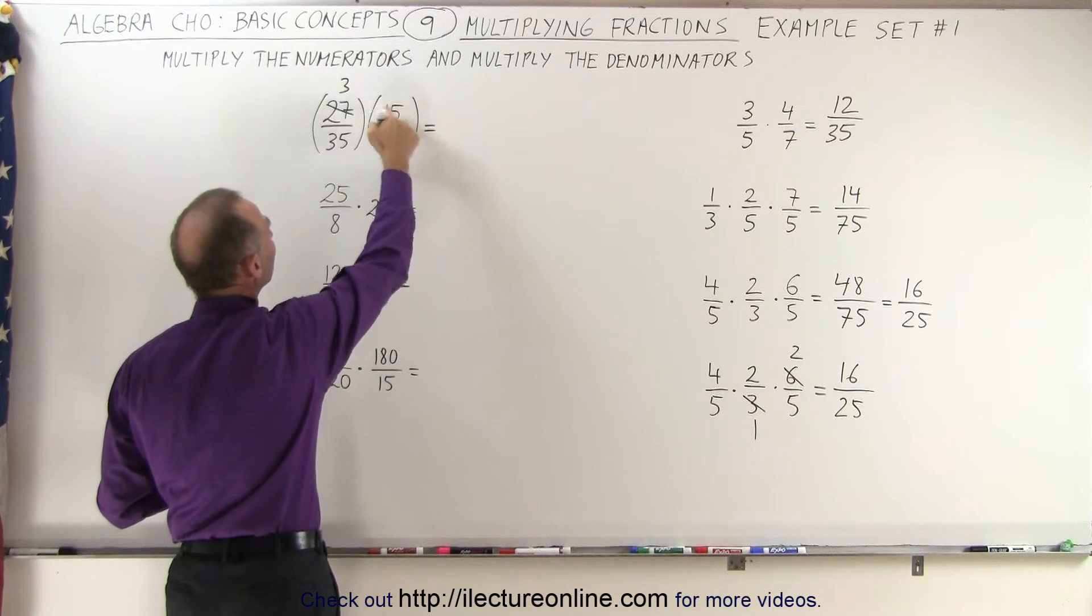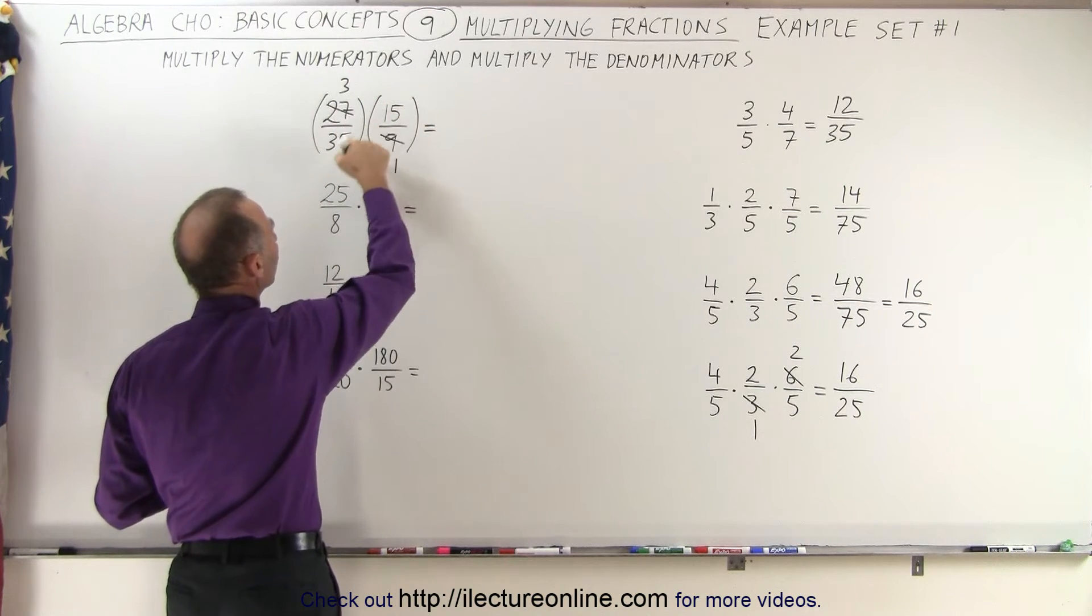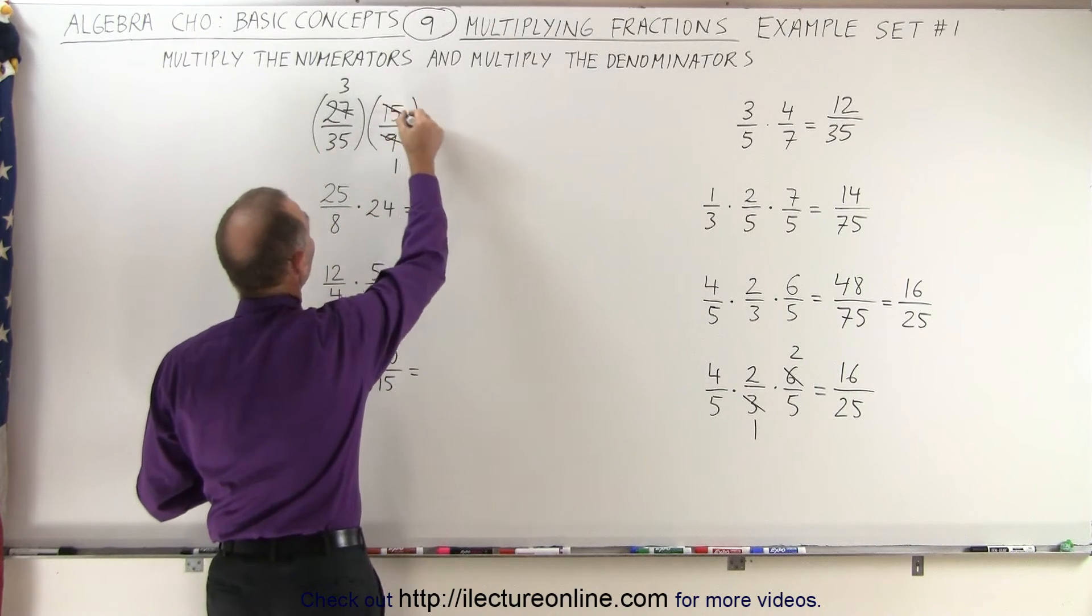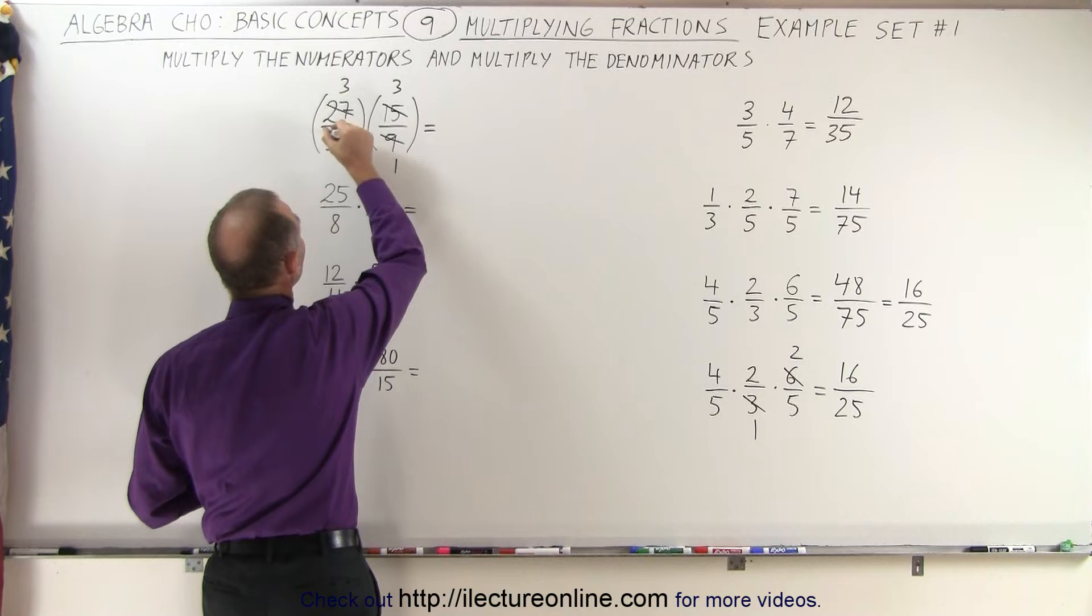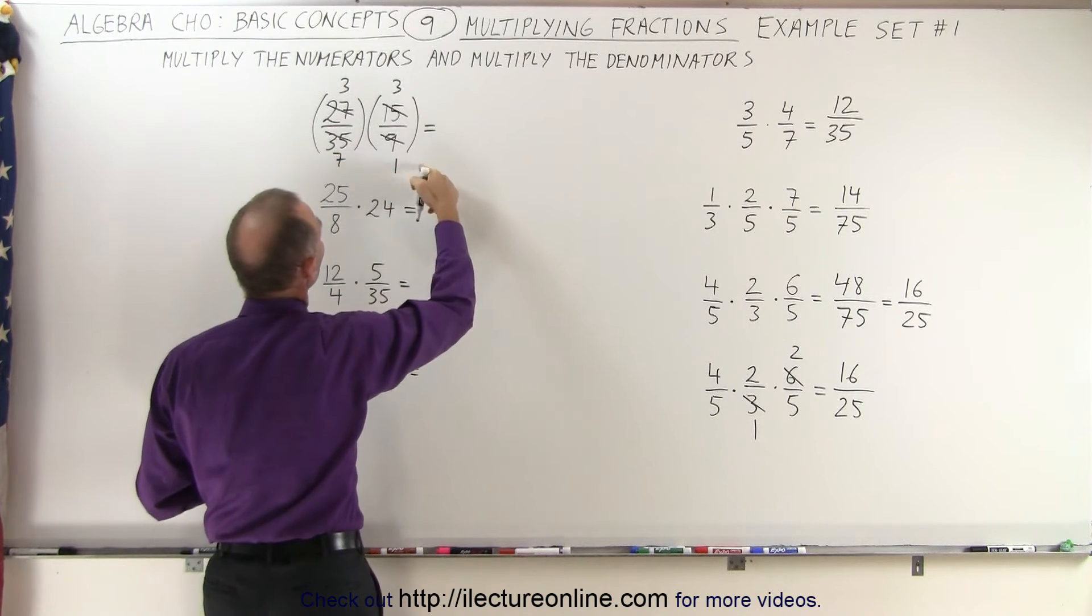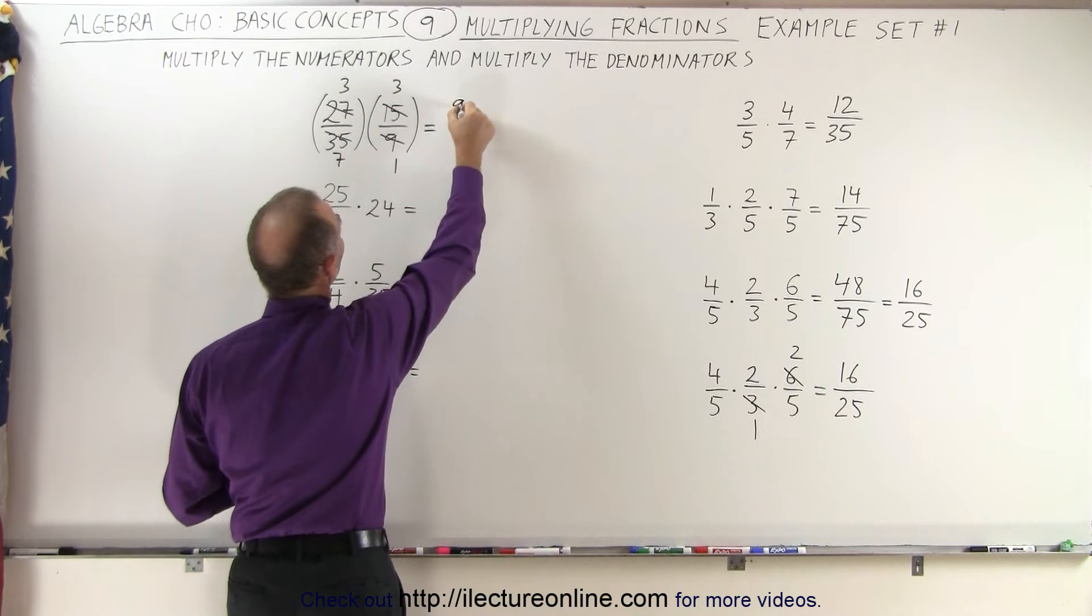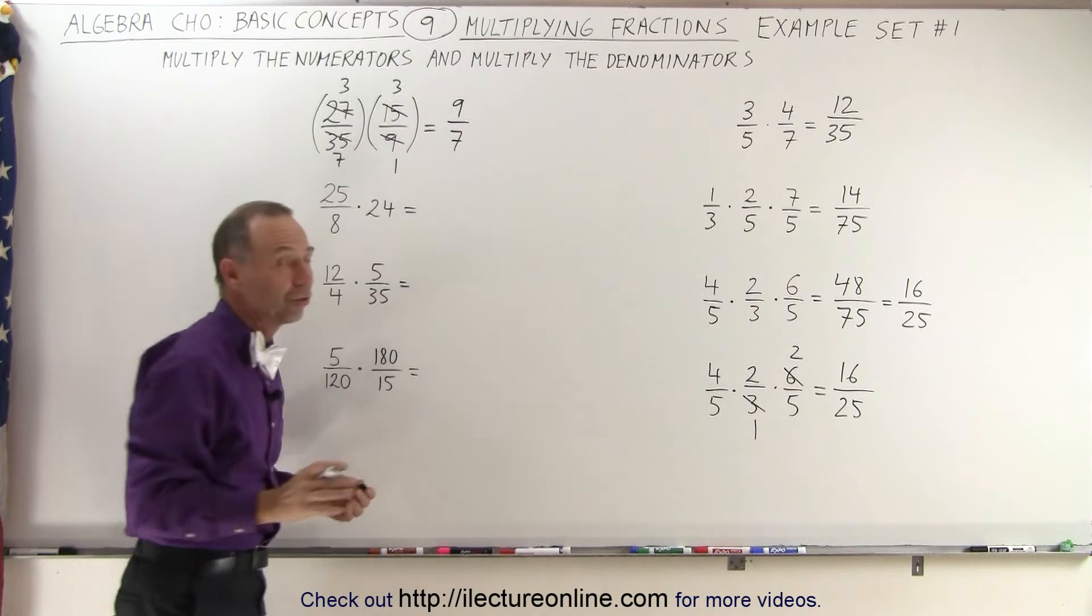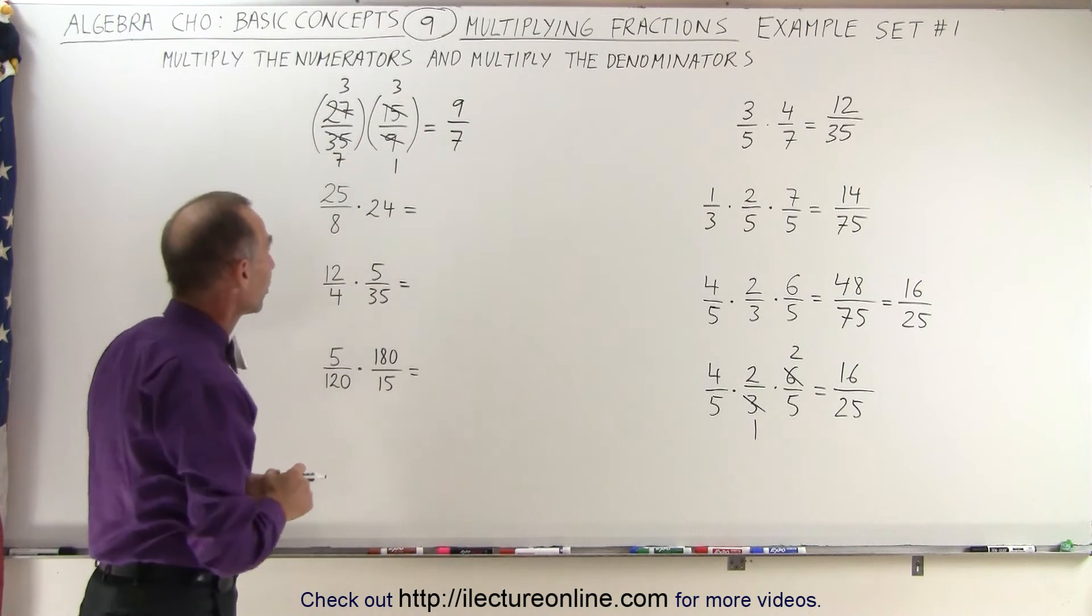Then we have 15 and 35. Both are divisible by 5 because they end in a 5. So 15 divided by 5 is 3, and 35 divided by 5 is 7. Now we can multiply the numerators and denominators together, so 3 times 3 gives us 9, and 7 times 1 gives us 7. That makes it a lot easier to multiply those fractions together.